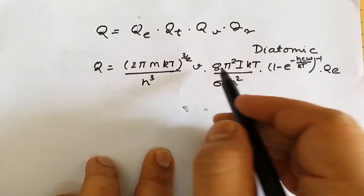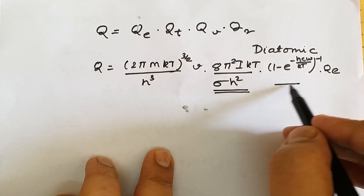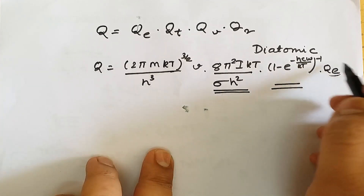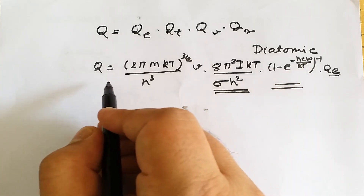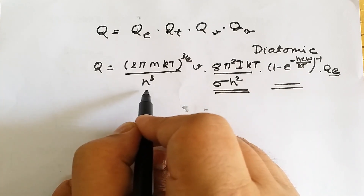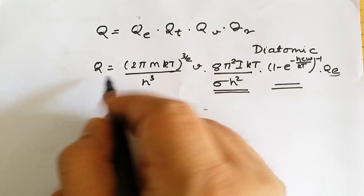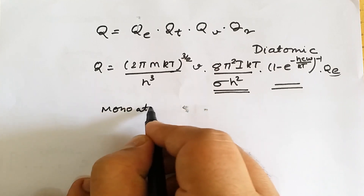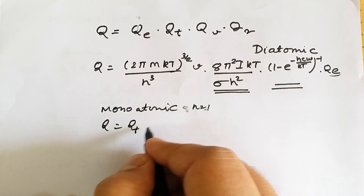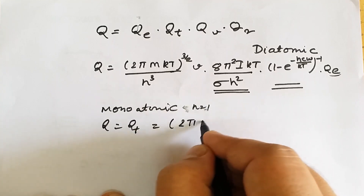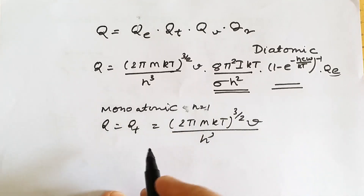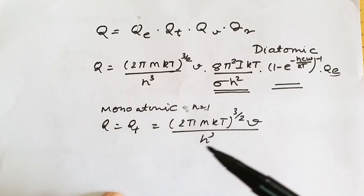For a monatomic molecule, the rotational and vibrational contributions are not considered, and qe is also equal to 1. Therefore, for a monatomic molecule (n = 1), the total partition function is only due to the translational contribution: q = (2πmkT)^(3/2) V / h³.